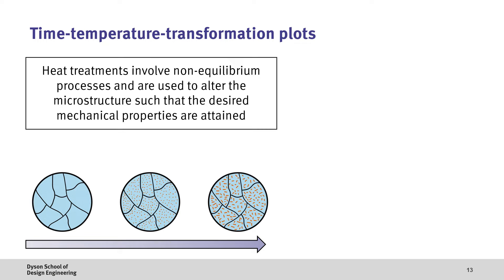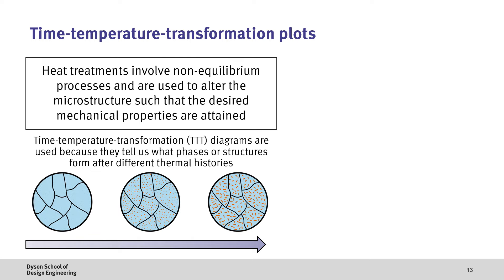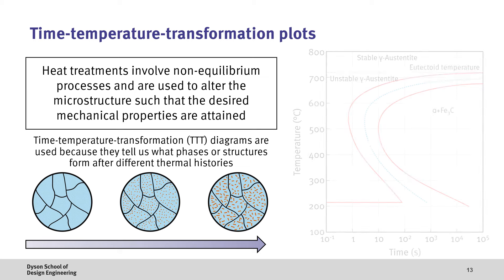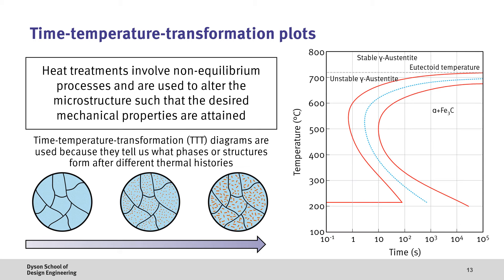So, evidently, heat treatments involve non-equilibrium processes, and are used to alter the microstructure to achieve the desired properties, but how do we quantify the rates of cooling and the resultant microstructures a bit more? Well, in this case, we can use the time-temperature transformation diagram, or TTT plot. Here, we have temperature on the y-axis, and time on the x-axis. Now, for the iron carbon TTT plot, we have a few features to note.